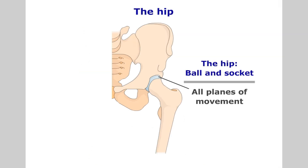The hip, being a ball and socket joint, is capable of many movements including flexion, extension, abduction, adduction, circumduction and lateral and medial rotation.